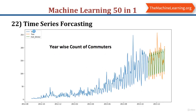The next topic is time series forecasting. Time series forecasting is an important area of machine learning that is often neglected because the time component makes these problems more difficult to handle. When using classical statistics, the primary concern is the analysis of time series. Time series analysis involves developing models that best capture or describe an observed time series to understand the underlying causes. Forecasting involves taking models fit on historical data and using them to predict future observations.